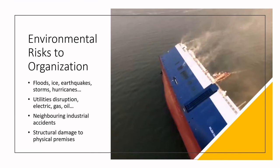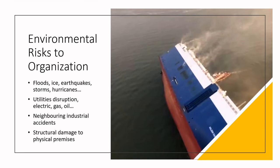Another area is environmental risks — floods, ice, earthquakes, storms, hurricanes. We live in Canada, and the possibility of various environmental disasters is not uncommon. Right now in the fall season, much of the east coast has the potential for hurricane activity, and flooding or ice storms are distinct possibilities in certain areas. Environmental risks could also include utilities disruption — if the electricity were shut off at a large freezer plant, what would happen to all the product in storage? Do you have a plan to maintain quality?